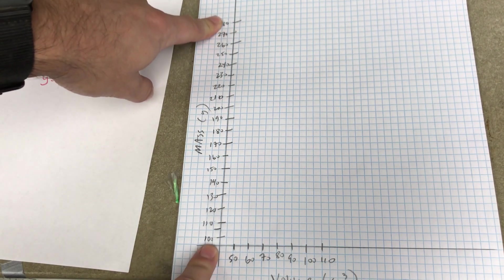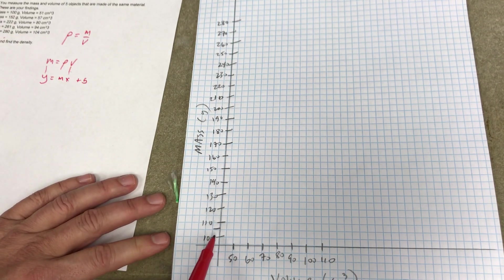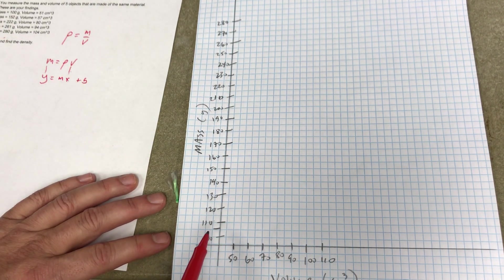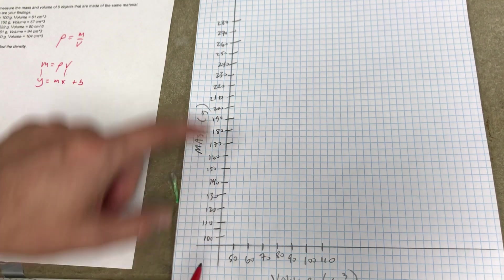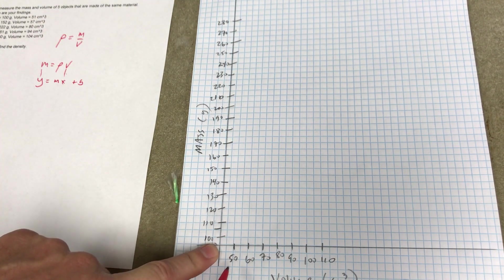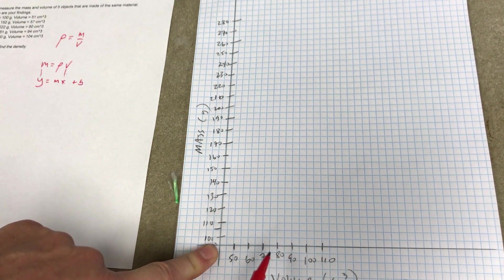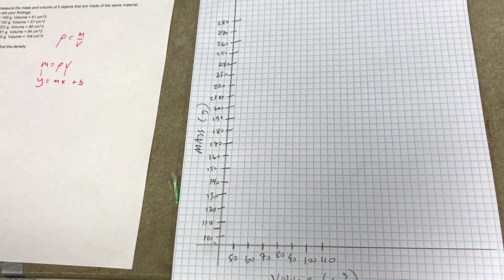So I need to go from 100 to 280. I'd like to take at least half the graph, okay? So if I do every two squares is 10 grams, then I can go from 100 to 280. I don't have to start at zero, okay? I don't have to do that. And the same thing for the volume. I actually picked, started right here at 50 and went 10. I didn't go halfway, so I could go bigger, but I'm not going to do it again.